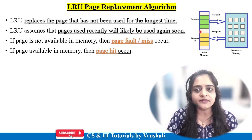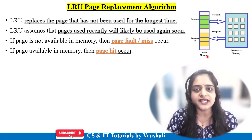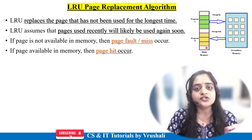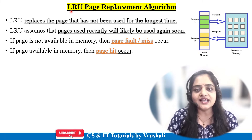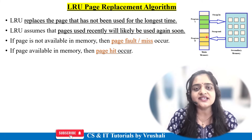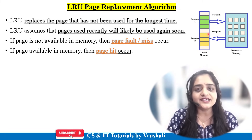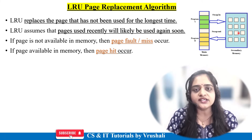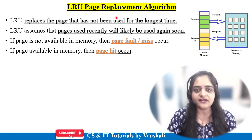Again, sometimes what happens is that main memory is full — there is no space available for new process execution and the CPU is demanding page number 5, but currently there is no space available. So the operating system uses the LRU — Least Recently Used — page replacement algorithm. It finds out which page is least recently used or not used recently, then swaps that particular page from main memory to secondary memory and makes space for the new page for execution. That is when the LRU algorithm is used.